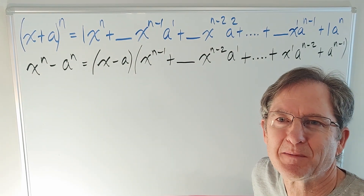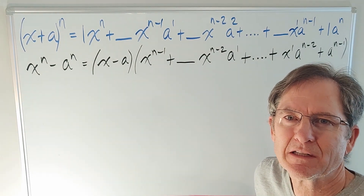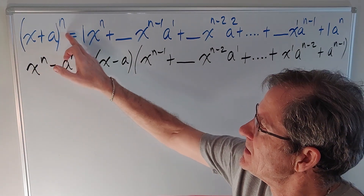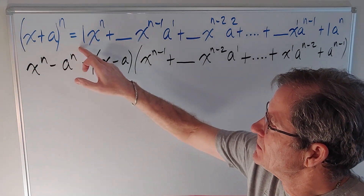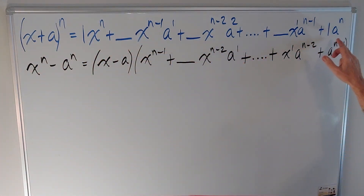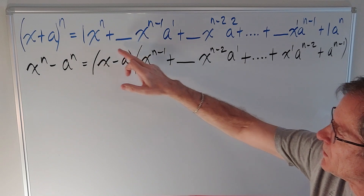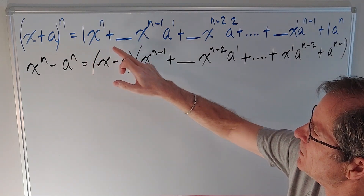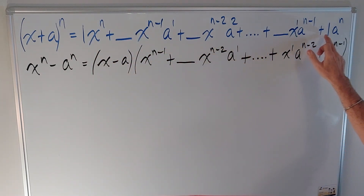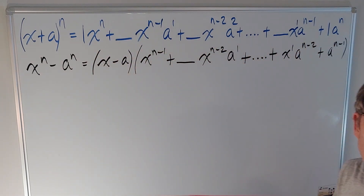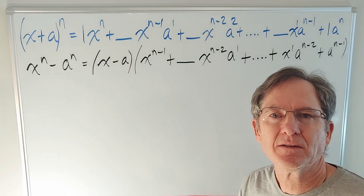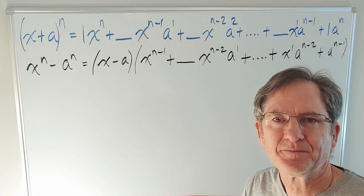In the last video we talked about the binomial expansion of x plus a to the n. We explained how this is what you get, where the coefficients 1, this, this, this, and that 1 create a line in Pascal's triangle.